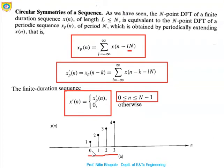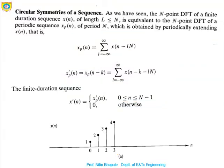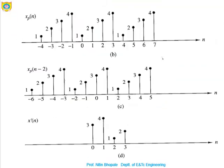For n = 0 to 3, x(0)=1, x(1)=2, x(2)=3, x(3)=4. Now for this sequence, xp(n) is the periodic sequence formed from x(n), repeating the values 0, 1, 2, 3 infinitely in both directions — it gets repeated further to the right and also repeated to the left.